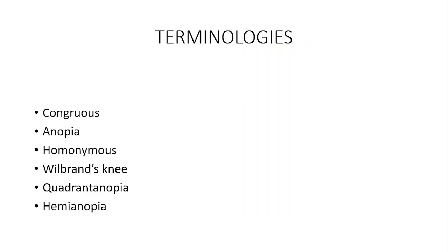Good morning students. Today we are going to learn about visual fields. Visual fields are defined as what is in front of you — how far you can see with your eyes. Anything you cannot see is marked as a dark area, and places you can see are bright areas. Areas you cannot see we call anopia. Visual fields: 'visual' is what you see, and 'field' is what is in front of you, so all areas you can see in front of you without turning your head become your visual fields.